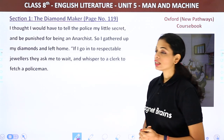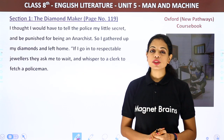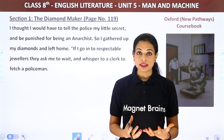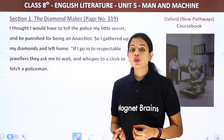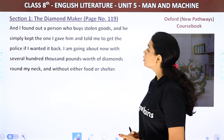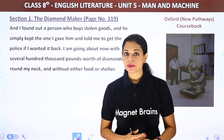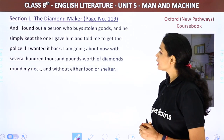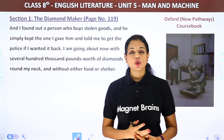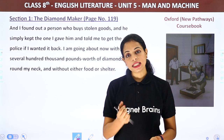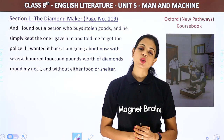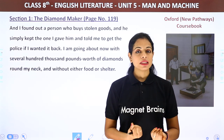He found a person who buys stolen goods, but that man simply kept the diamond he was given and told him to get the police if he wanted it back — knowing full well he would never go to the police. So that diamond was lost for nothing. 'I am going about now with several hundred thousand pounds' worth of diamonds round my neck,' he said.